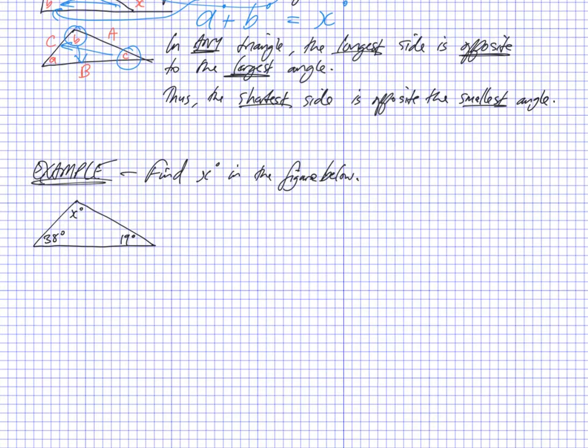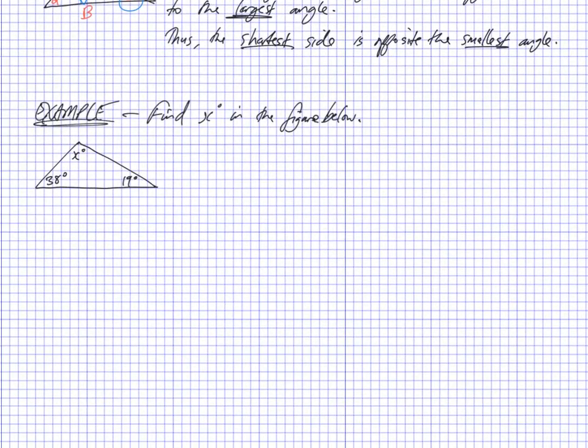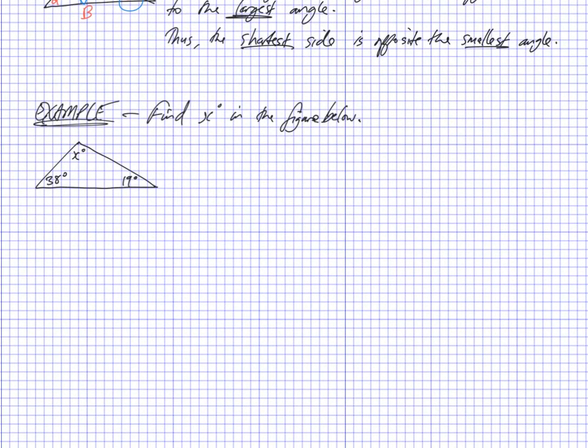So let's use some triangle properties or one triangle property to find X in the figure below. So two column proof statement and reason.